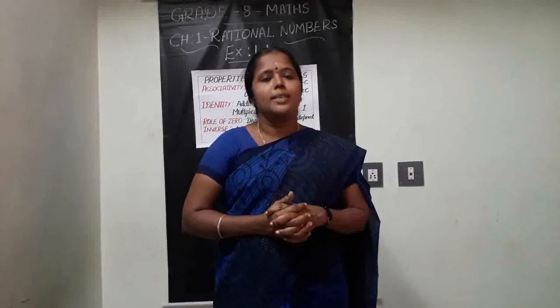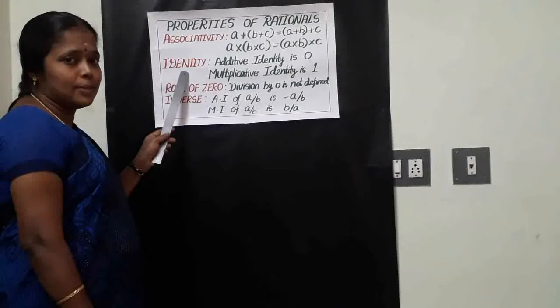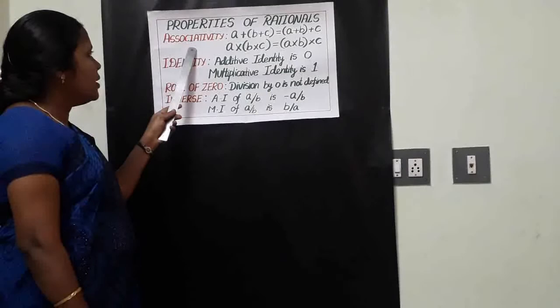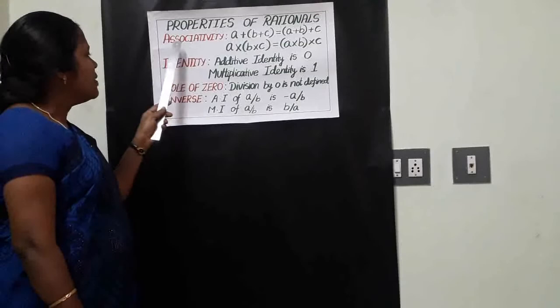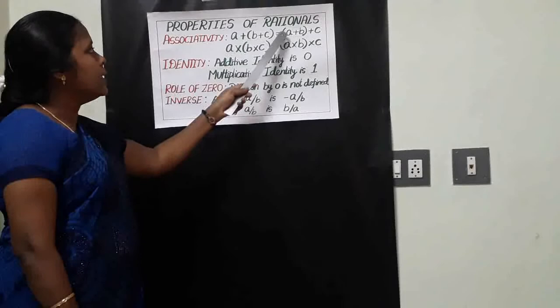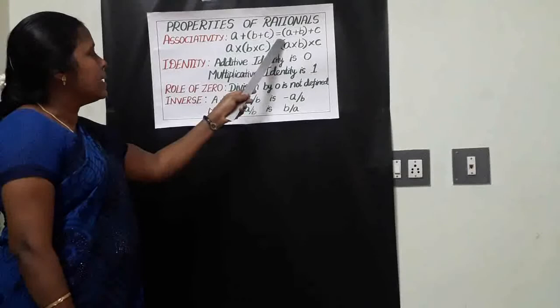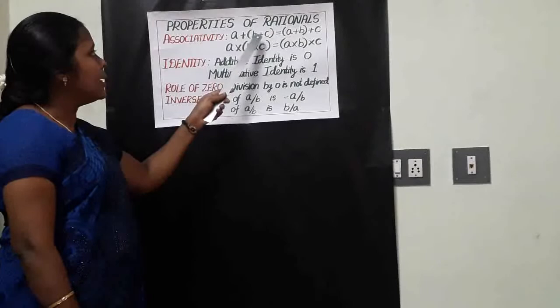Before going to see the exercise sums, let us recall the properties we discussed in the last class. These properties are what we are going to use to solve today's sums. The first property is associativity. For any three rational numbers a, b, c: a plus (b plus c) is equal to (a plus b) plus c. This is associativity of rational numbers under addition.